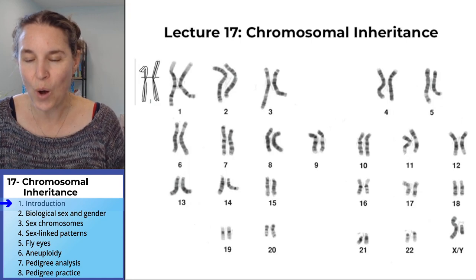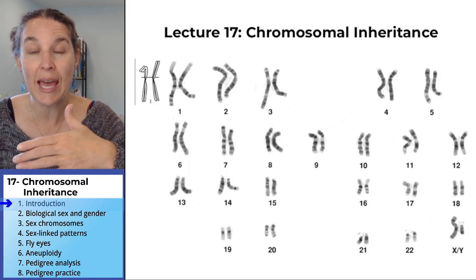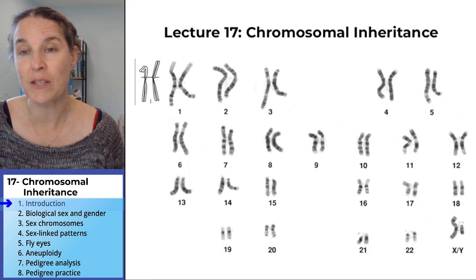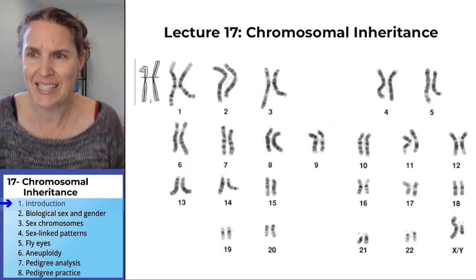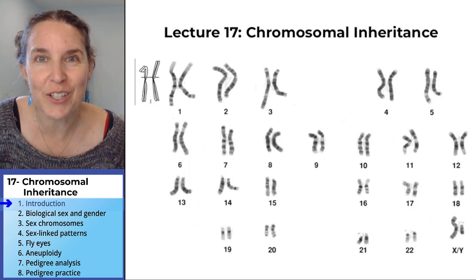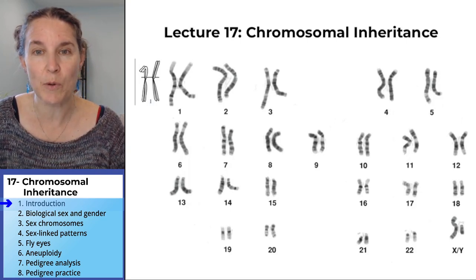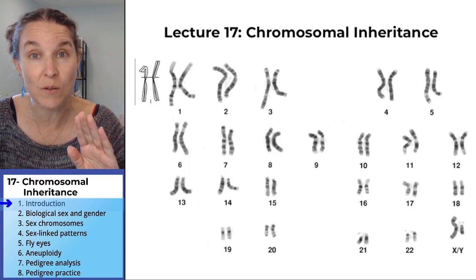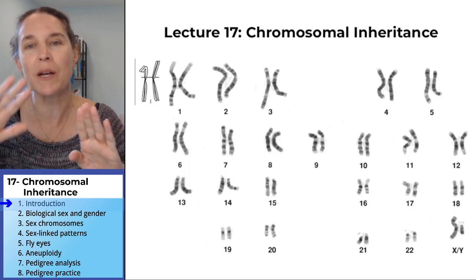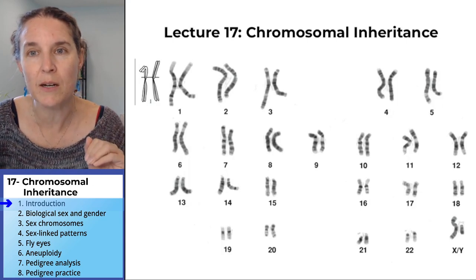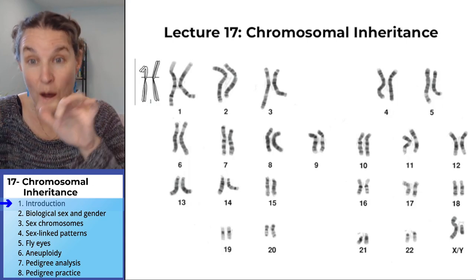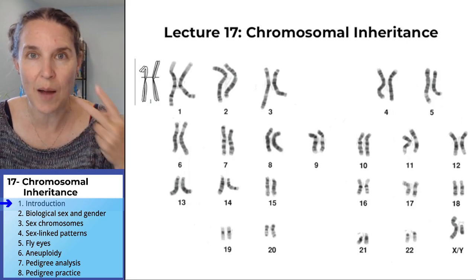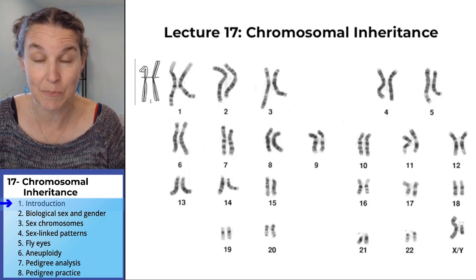As you already know, we can look at our chromosomes using a karyotype — that's what you're seeing on the screen here. This is a human karyotype. You've seen karyotypes before. Karyotypes let us look at our homologous chromosomes: one chromosome from an egg parent, one chromosome from a sperm parent. It lets us count our chromosomes and convince ourselves that there are two copies of every homologous pair.